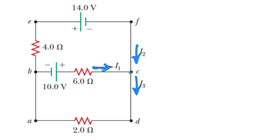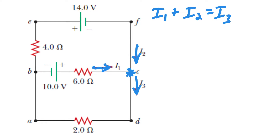We can use Kirchhoff's node law to solve at this junction here. The junction law or node law says that I1 plus I2 is going to equal I3. Incoming current into the node and outgoing current should be equal to each other. The next thing is to establish a loop in your circuit so we can use Kirchhoff's loop law. I'm just going to choose two clockwise loops.